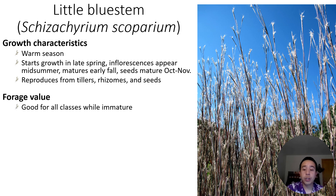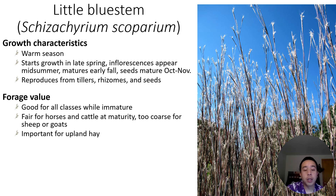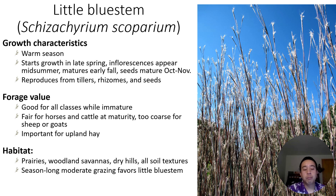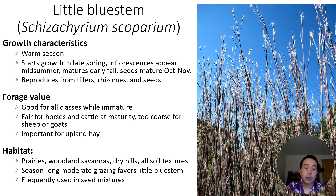In terms of forage, it's good for most classes of livestock and for wildlife when immature or young. Once it reaches full maturity it can still be okay for horses and cattle, but it often becomes too coarse for sheep and goats. It can also be important upland hay. In terms of habitat, it occurs in prairies, woodland savannas, dry hills, and all kinds of different soil texture types. With season-long moderate grazing, the plant community would typically favor little bluestem, because big bluestem is a much more desirable forage species — more of that ice cream forage plant.